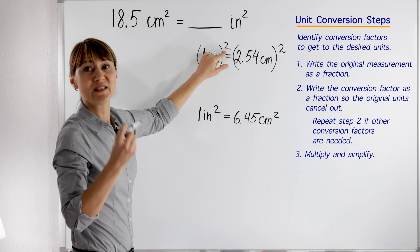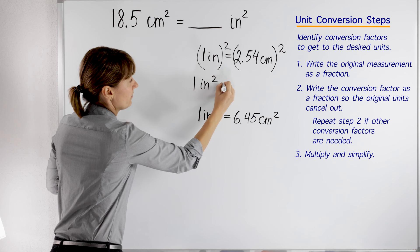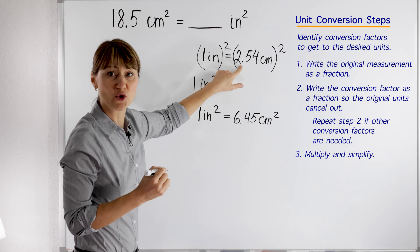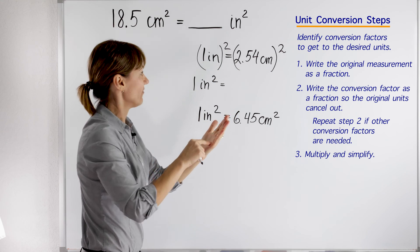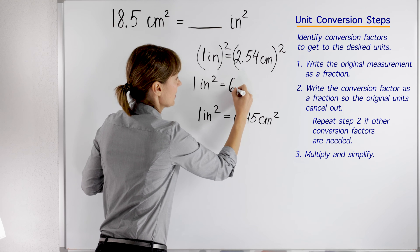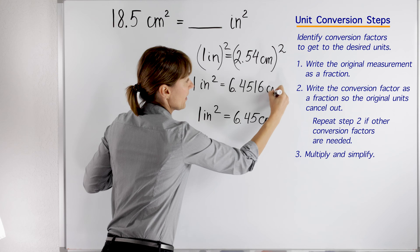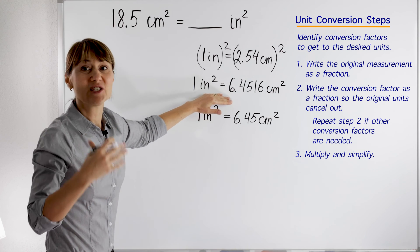So one squared means one times one, which is one inch squared. Then you just pick a calculator: 2.54 times 2.54. You will get 6.4516 cm². You see? Alright, so we are ready to go.